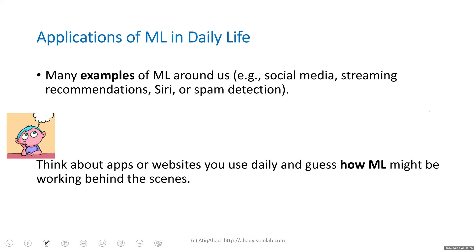Transformer-based systems can be used for many areas. Most AI applications we discussed in previous lectures are based on machine learning, and its subset deep learning — like social media recommendations, streaming series recommendations, and spam detection. Think about other apps or websites you use daily and guess how machine learning might be working behind the scenes.